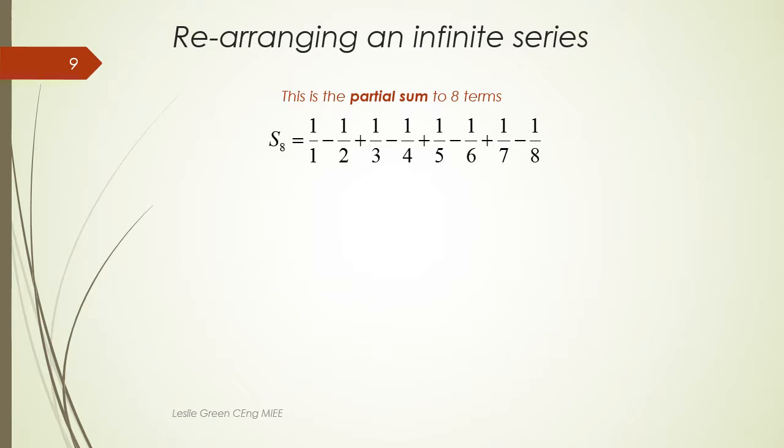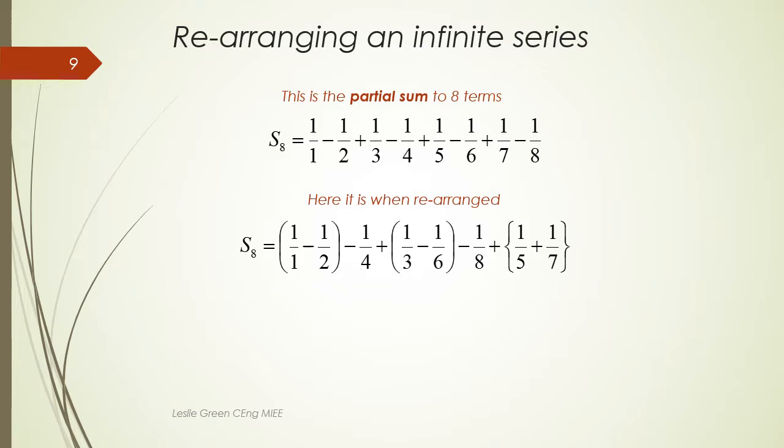S8 is the partial sum of S. Only the first eight terms are considered. If we rearrange the terms to make it look like T, we have a couple of terms left over at the end.